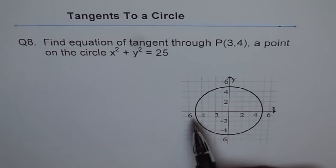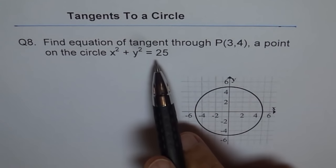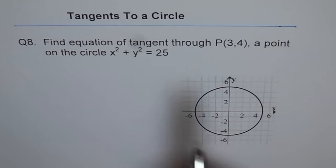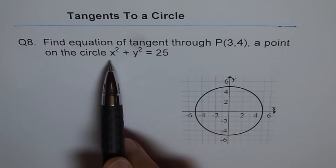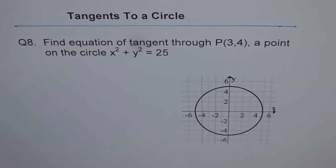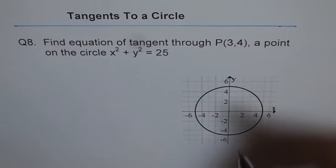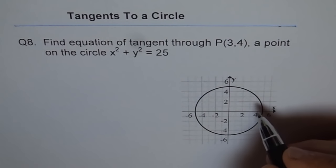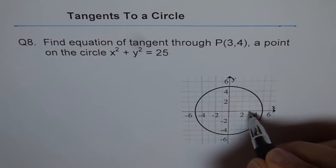So here we have a circle x² + y² = 25, which means the radius should be 5. That's the circle with center at the origin (0, 0) and radius 5. The point P given to us is (3, 4), so we can plot that point on the circle.